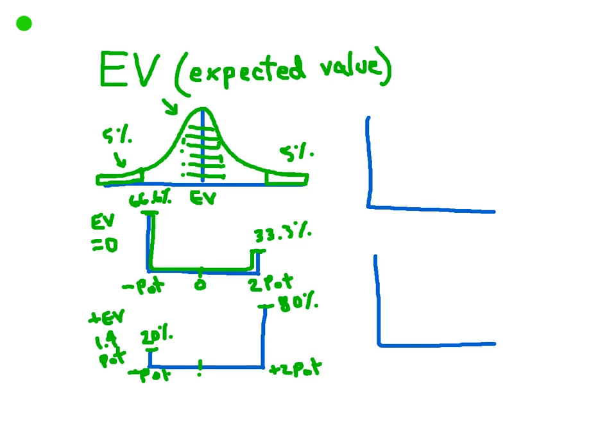Instead of an EV of 0 now, we actually have an EV over here somewhere of 1.4 times the pot. But again, we'll never actually win 1.4 times the pot. We're either winning 2 pot or we're losing 1 times the pot. So even when our EV is positive, it can be highly volatile. There can be a high amount of variance.